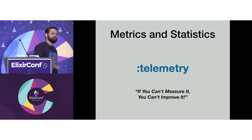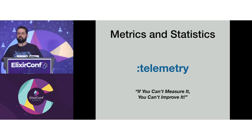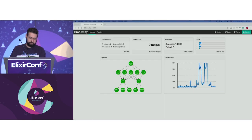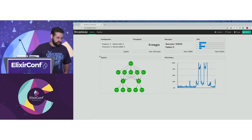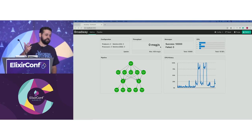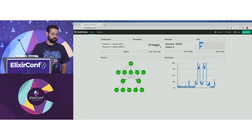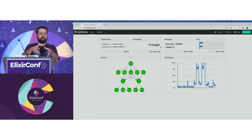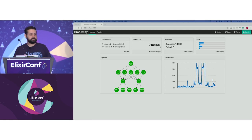The last thing I want to show you today is the new feature we're working on: the integration with telemetry, which we already saw in the demo. This is a LiveView dashboard with two different kinds of metrics: throughput — how many messages you can process per second — and for each stage, a relation between processing time and idle time, which helps you find bottlenecks in your pipeline.